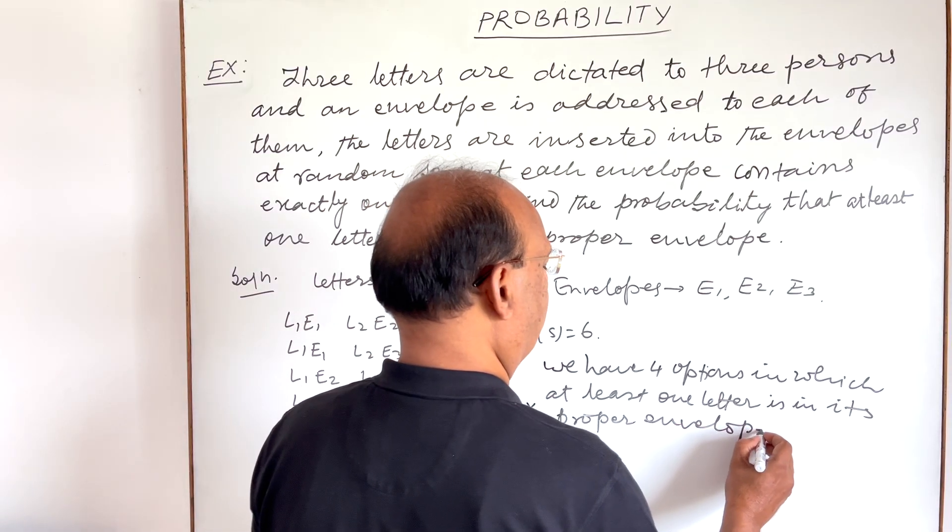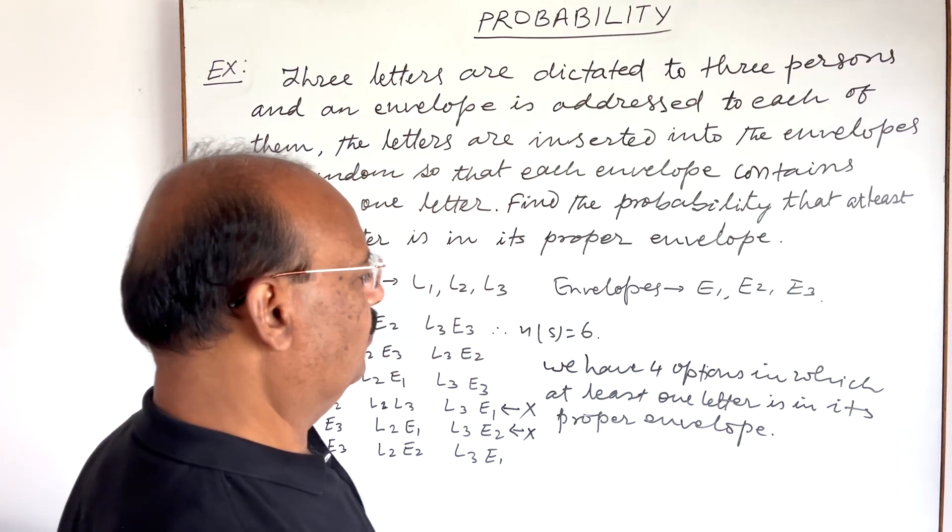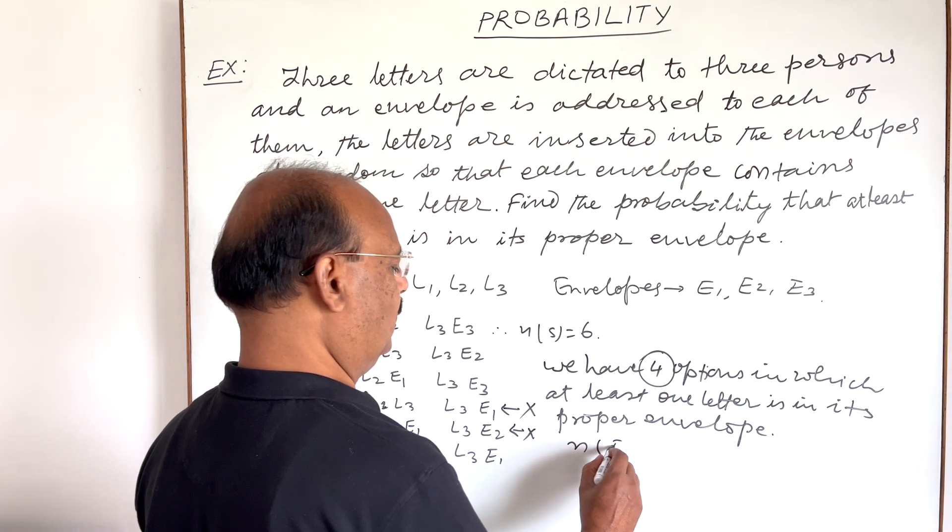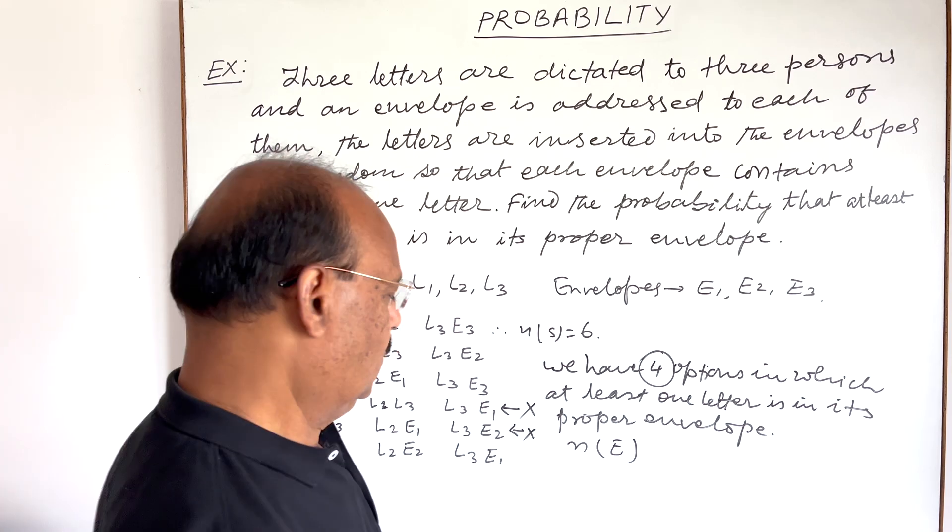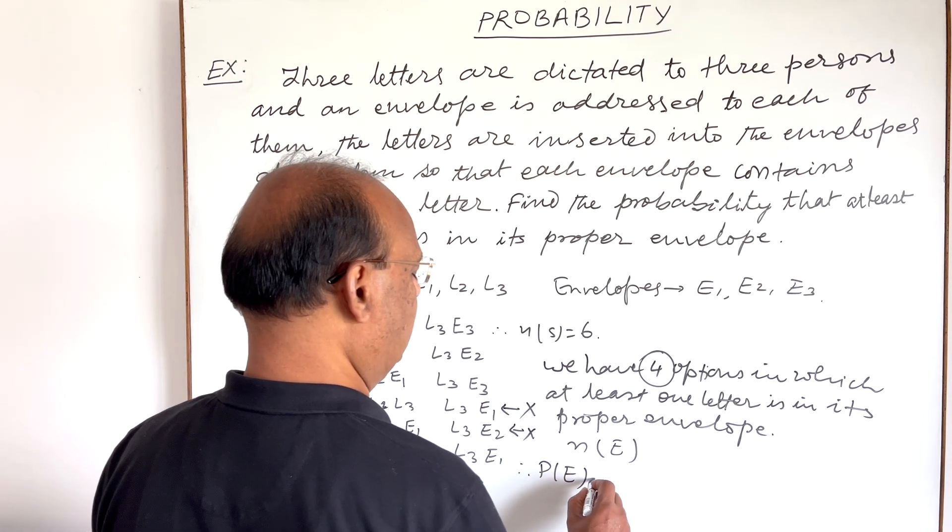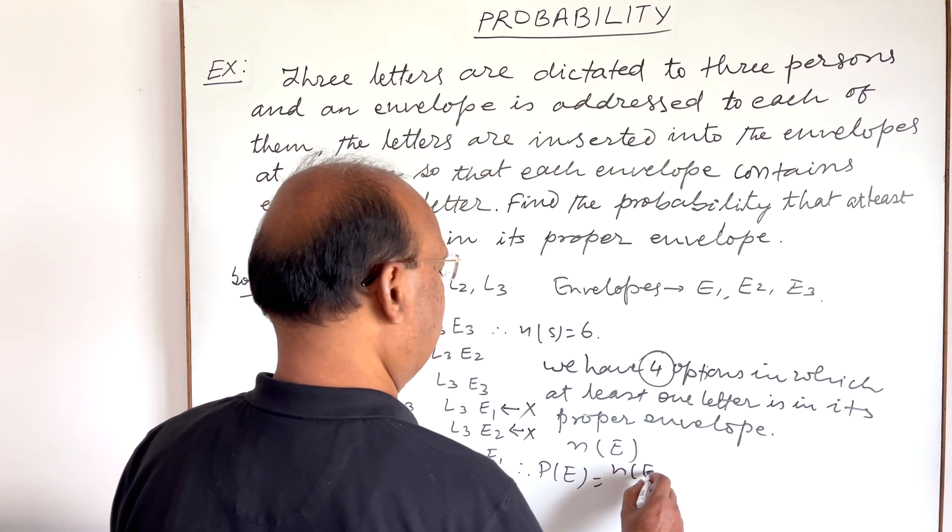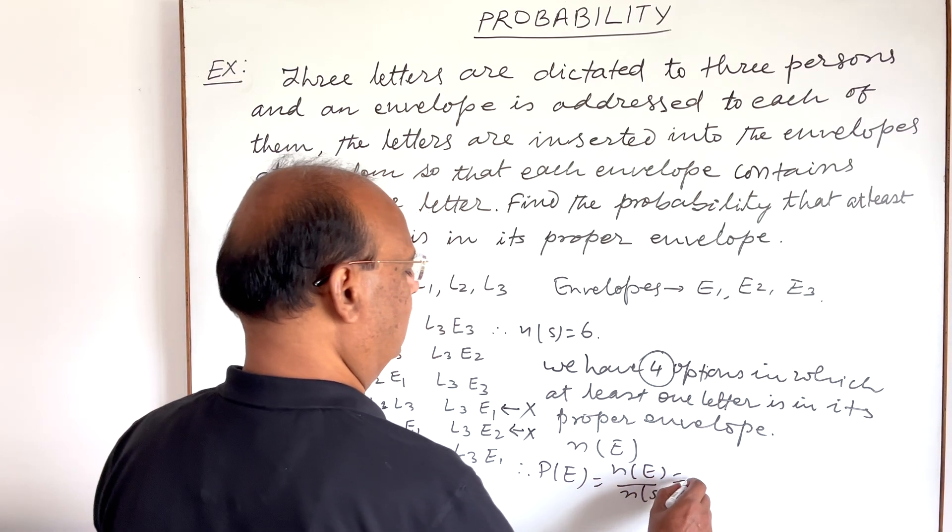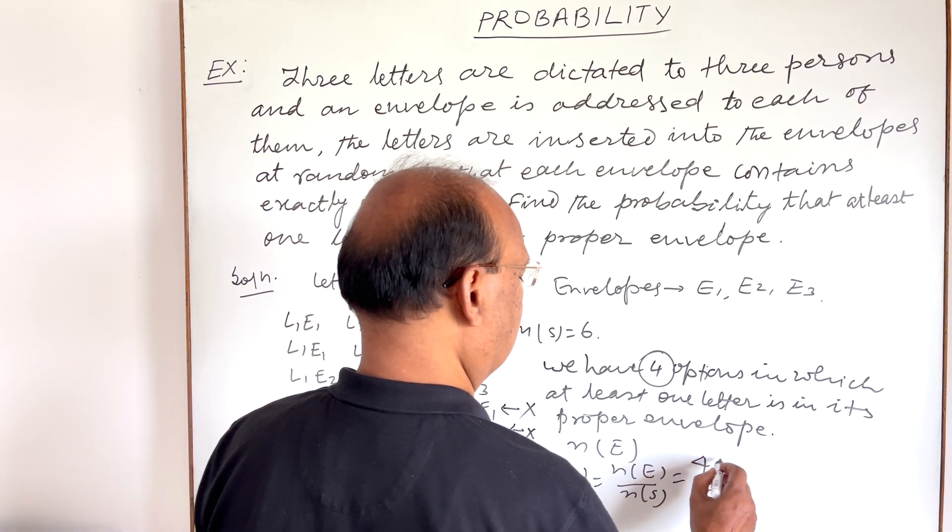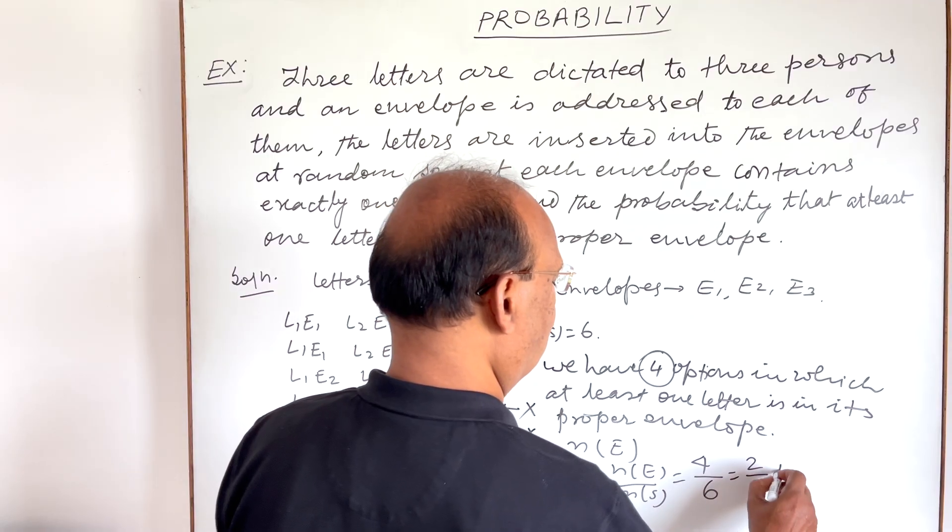These four favorable outcomes give us the value of n(E). Therefore, the probability of event E, P(E), equals n(E) divided by n(S). n(E) equals 4 and n(S) equals 6. So the answer is 2/3.